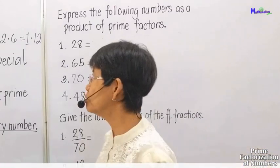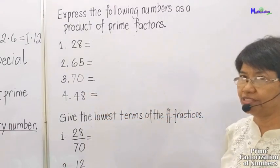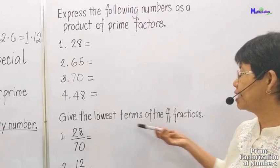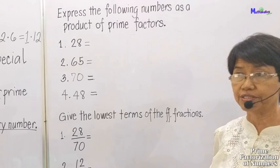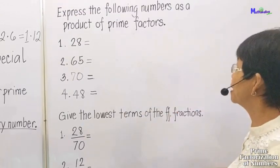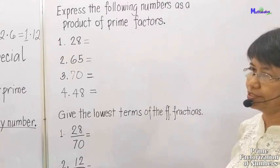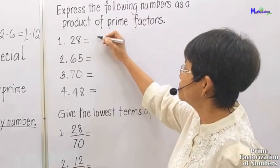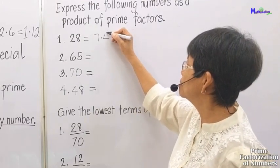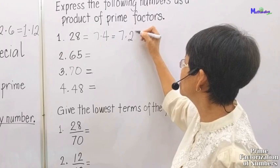Now, how do we apply or use prime factorization? First, we can apply it to get the lowest terms of a fraction. But let us first express the following numbers as a product of prime factors. The number 28 can be factored as 7 times 4, or 7 times 2 squared. The number 65 is 5 times 13.